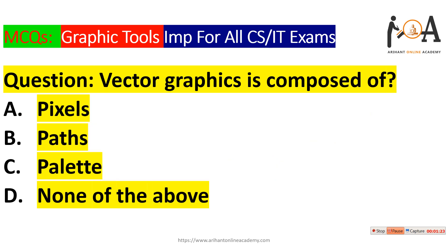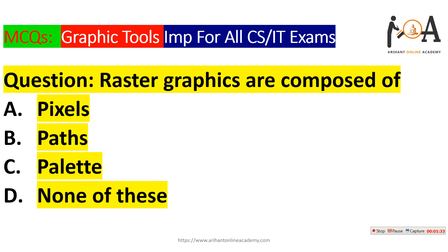The next question is: vector graphics is composed of? Basically vector graphics is composed of paths. And raster graphics are composed of pixels — from tiny pixels the complete image is made. So we can say it is a type of raster graphics, and pixels is the right answer.